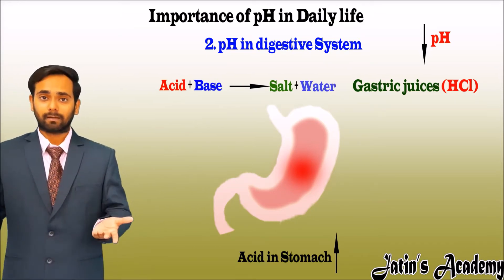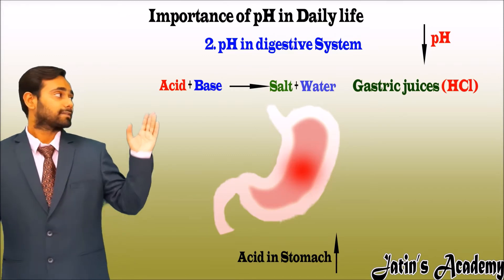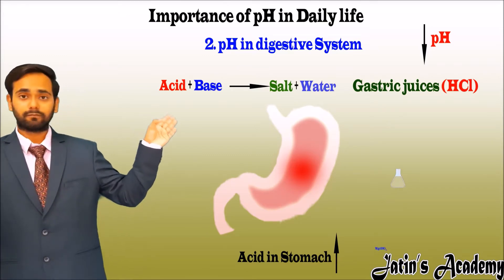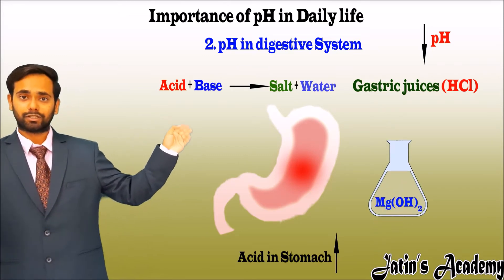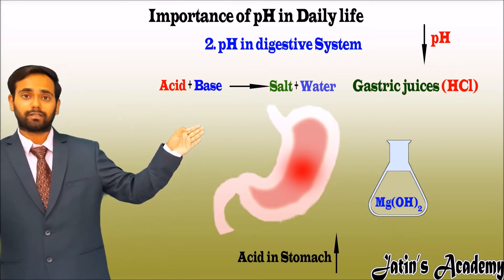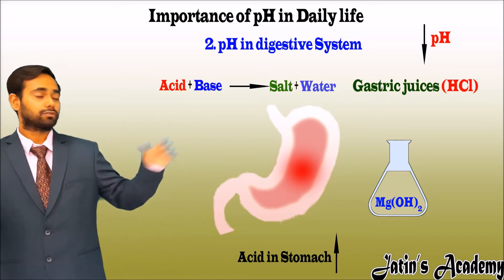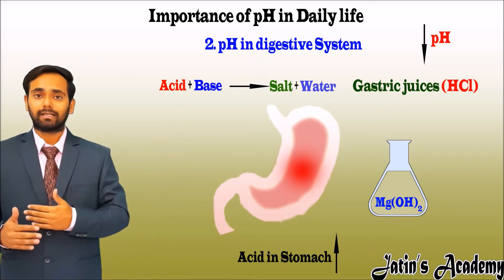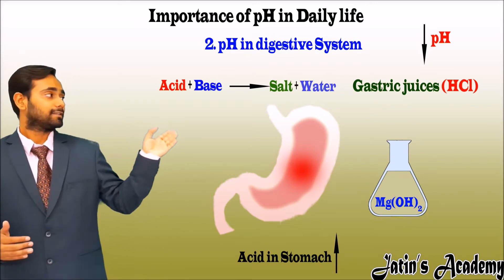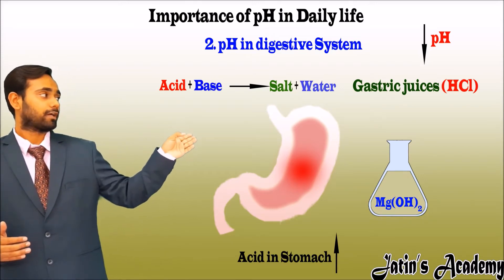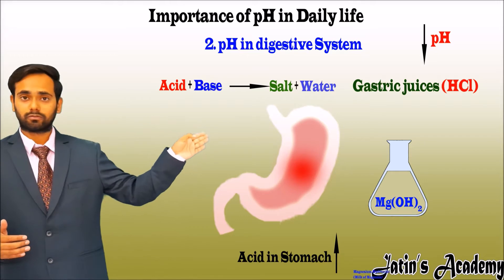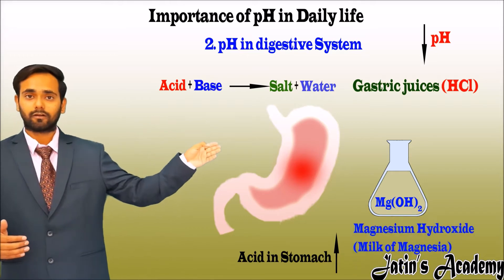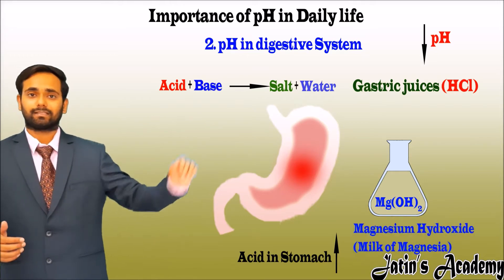An example of an antacid is magnesium hydroxide, Mg(OH)₂, which is commonly used in daily life. Magnesium hydroxide is also called milk of magnesia.